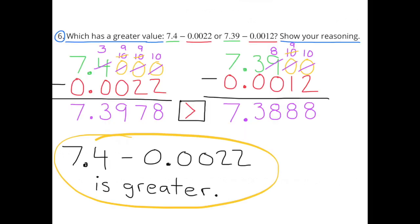Number 6: Which has a greater value — 7 and 4 tenths minus 22 ten-thousandths, or 7 and 39 hundredths minus 12 ten-thousandths? Show your reasoning. 7 and 4 tenths minus 22 ten-thousandths equals 7 and 3,978 ten-thousandths, and 7 and 39 hundredths minus 12 ten-thousandths equals 7 and 3,888 ten-thousandths. So 7 and 4 tenths minus 22 ten-thousandths is greater.